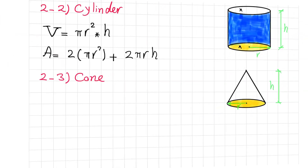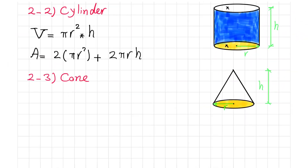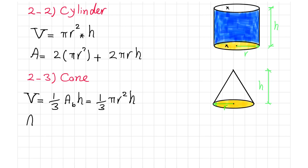The next important 3D shape is the cone. It has a circular base with radius R and height H. The volume V of a cone is one-third of the area of the base times H, which is 1/3 times π R squared times H. The surface area of the cone is π R times the square root of R squared plus H squared.